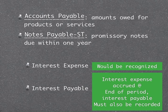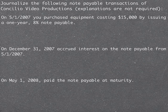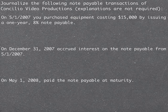So let's look at some examples of how we would journalize some of this. We're going to journalize the following note payable transactions of Concilio Video Productions, and we're not going to worry about explanations in these journal entries. On May 1st, 2007, you purchased equipment that cost fifteen thousand dollars and issued a one-year, eight percent note payable.